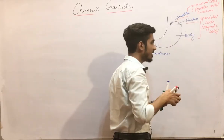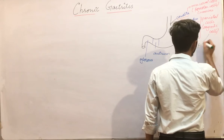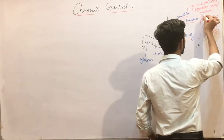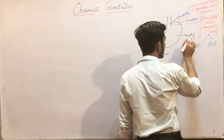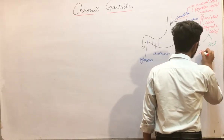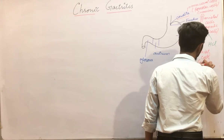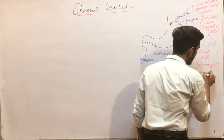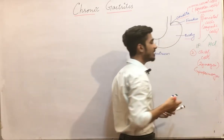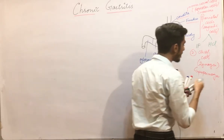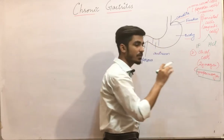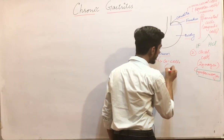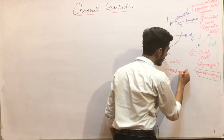Parietal cells secrete two things: the intrinsic factor and HCl — that is very important. The second type of cells present in the fundus and body are the chief cells, also called zymogen cells. These chief or zymogen cells secrete pepsinogen, which is converted into pepsin by HCl. Moving on to the antrum — this contains G cells, and these G cells secrete gastrin.